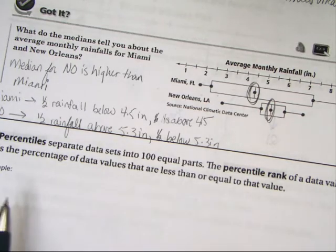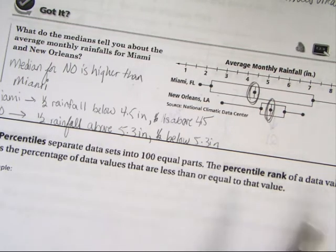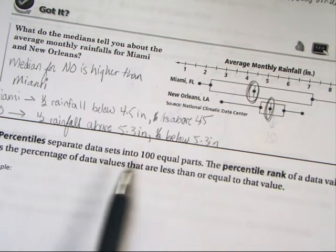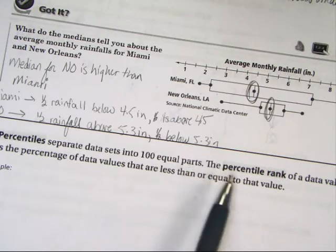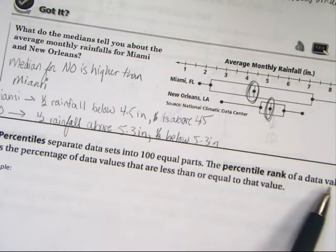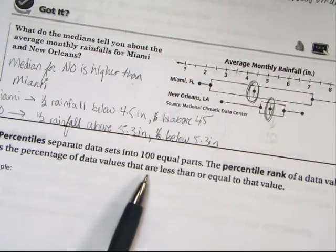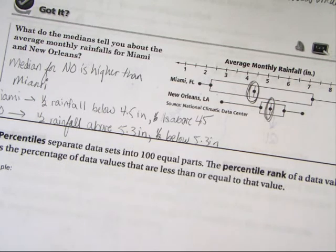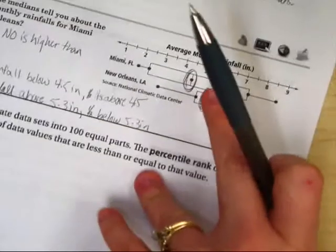Your last vocab term is percentiles and percentile rank. A percentile separates data sets into 100 equal parts. The percentile rank of a data value is the percentage of data values that are less than or equal to that particular value. For example, in problem 4...